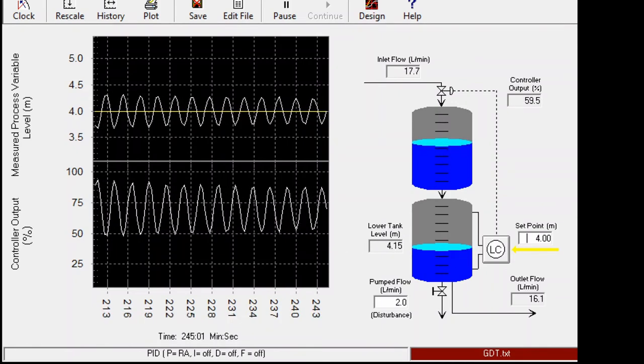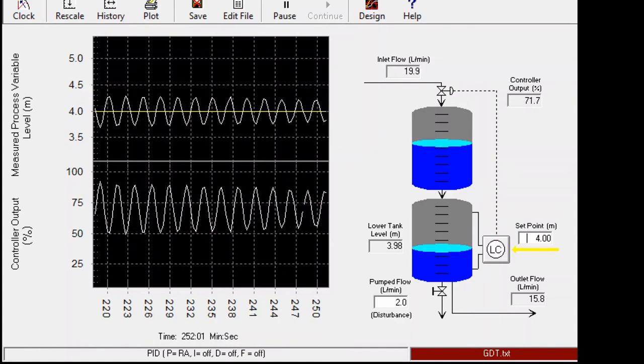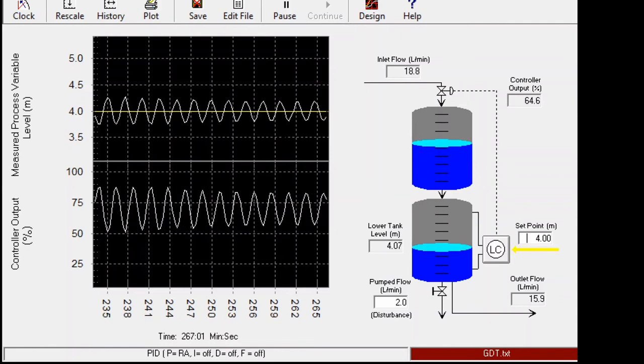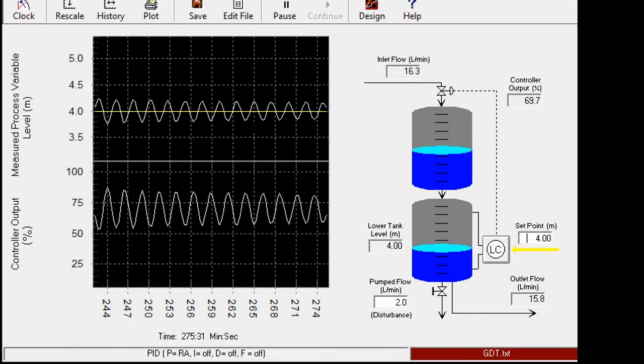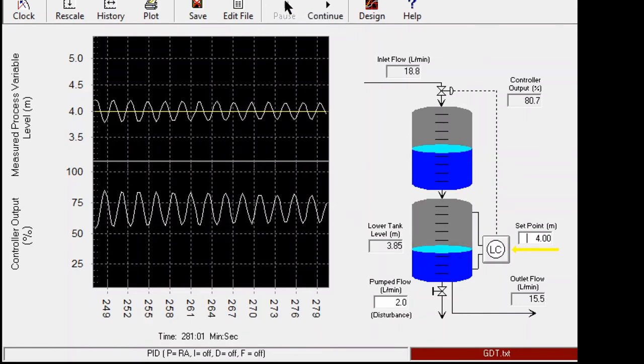We can consider this to be a sustained oscillation. We can further tune to get the value, however for this case maybe we can take this to be a case where we can consider this to be a sustained oscillation. So we have obtained our value for the ultimate gain for this process, which was 72.